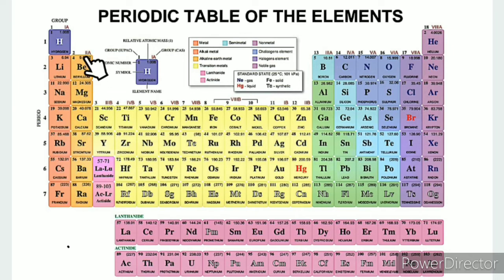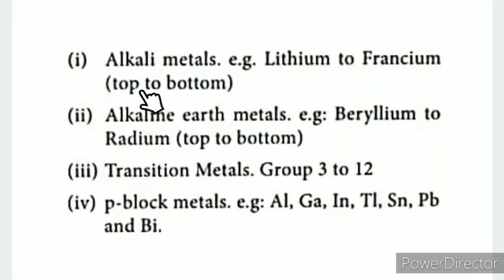These p-block metals include Aluminum, Thallium, Tin, Lead (symbol Pb), and Bismuth. These are all classified as metals in the periodic table.